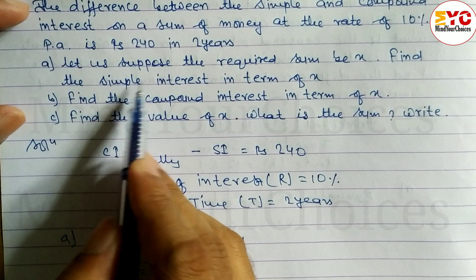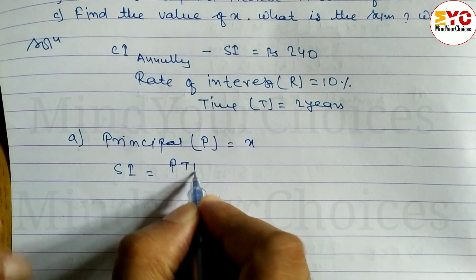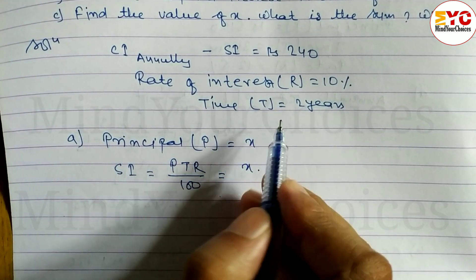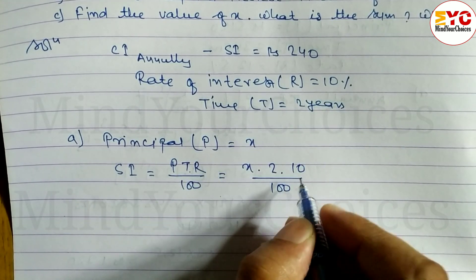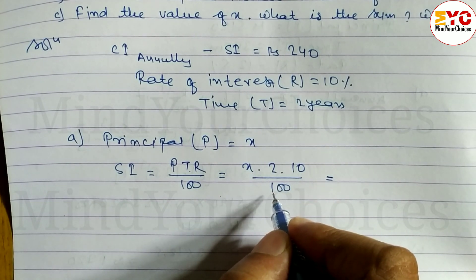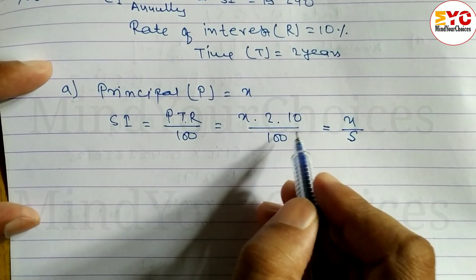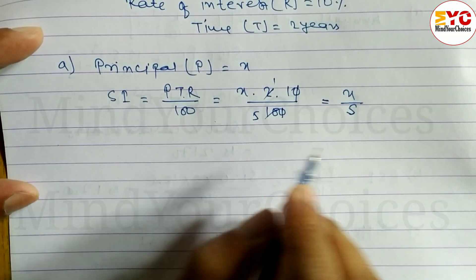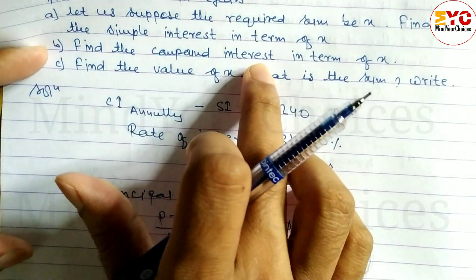Question part A says: find the simple interest in terms of x. The formula for simple interest is SI = PTR ÷ 100. Putting x for P, 2 for T, and 10 for R, divided by 100: we get 2 × 10 = 20, then 20 divided by 100 gives x/5. So simple interest equals x/5.